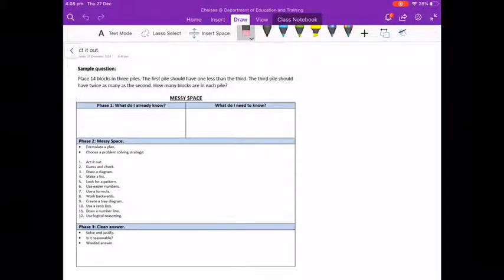Today we are looking at the acted out problem solving strategy within the messy space framework. I'm going to start by reading the sample question: Place 14 blocks in three piles. The first pile should have one less than the third. The third pile should have twice as many as the second. How many blocks are in each pile?